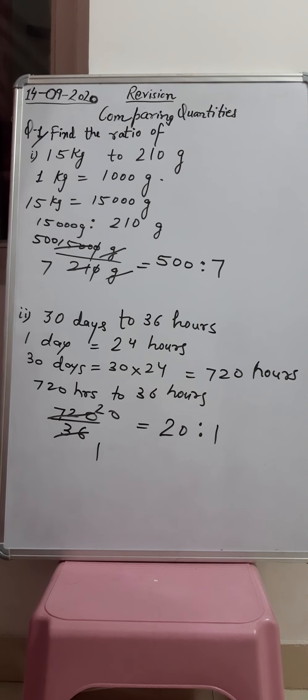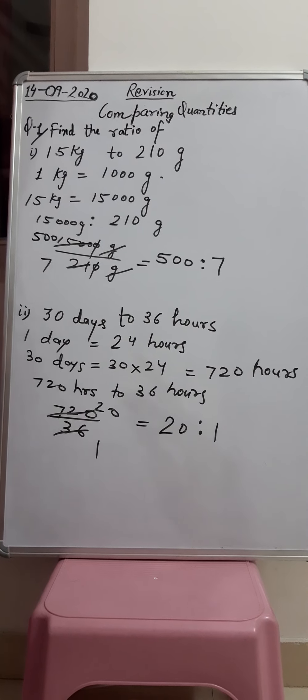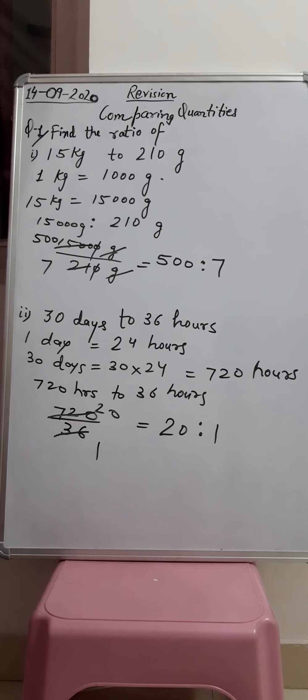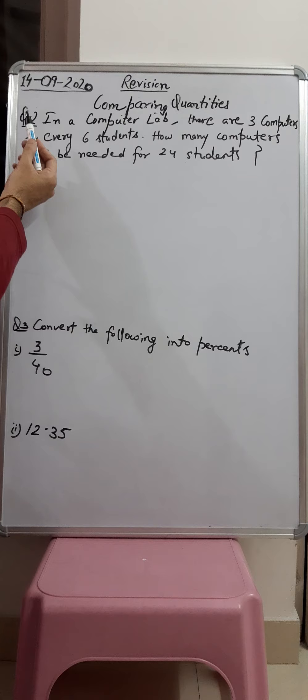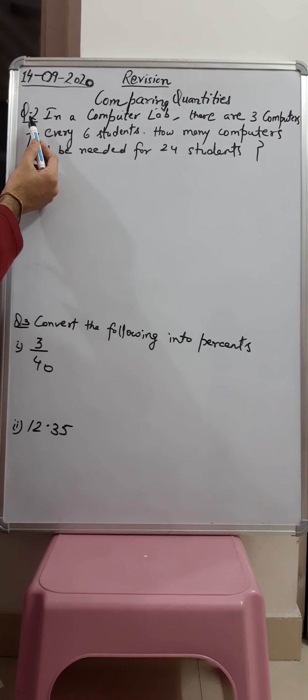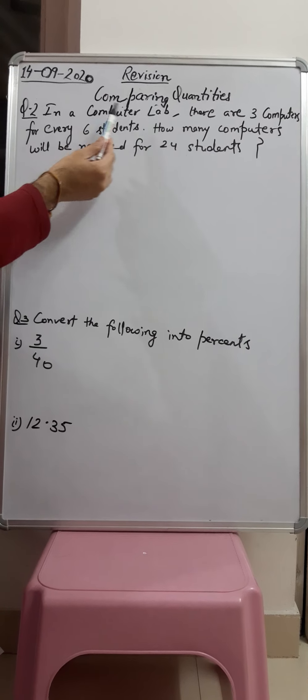In this way we can find our ratio by comparing quantities — the quantities have to be in the same units.